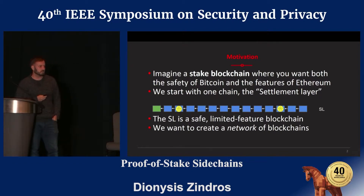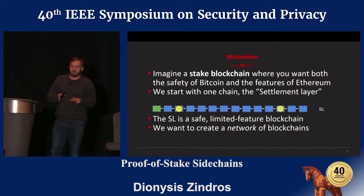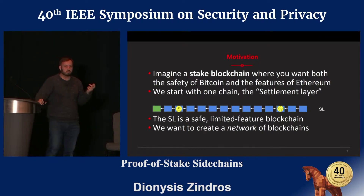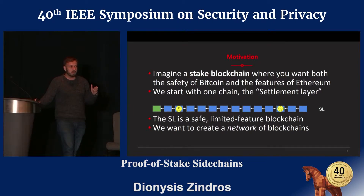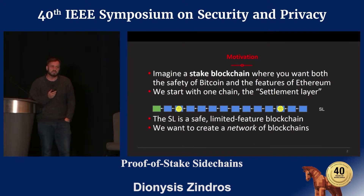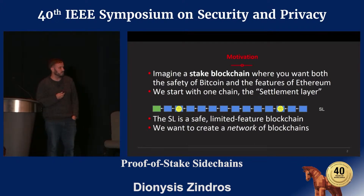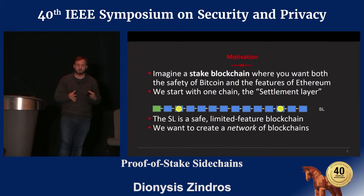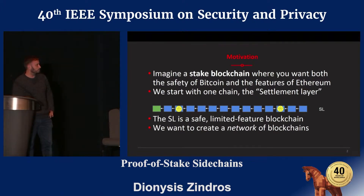The problem we're trying to solve is the following: currently when people use Bitcoin and Ethereum, they use Bitcoin for its safety and relative stability and low volatility. On the other hand, they use Ethereum for feature completeness, Turing completeness, and the nice features of smart contracts. So we see two different blockchains that give different features and they cannot necessarily be easily combined. The safety of Bitcoin comes exactly from the fact that its code base is limited and they don't accept too many feature-rich feature requests.